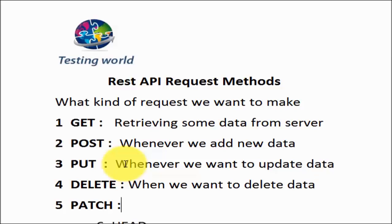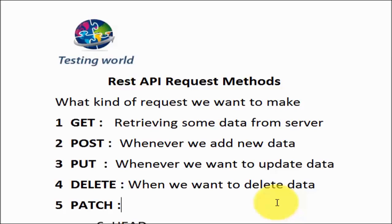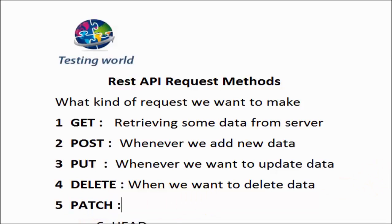Next is PATCH. PATCH is an important method and it is quite similar to PUT. When using PUT — say I have a bug with 5 fields: SUMMARY, DESCRIPTION, REPORTED BY, ASSIGNED TO, and PRIORITY — but I want to update only the description. With PUT, I still have to send all 5 fields to the server. But with PATCH, I send only the updated field. PATCH means we are sending only the updated data; the rest stays the same.